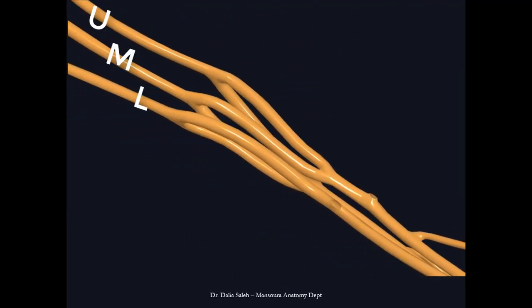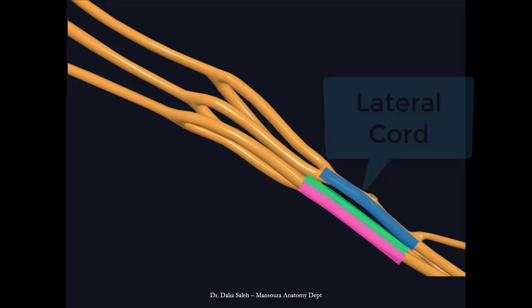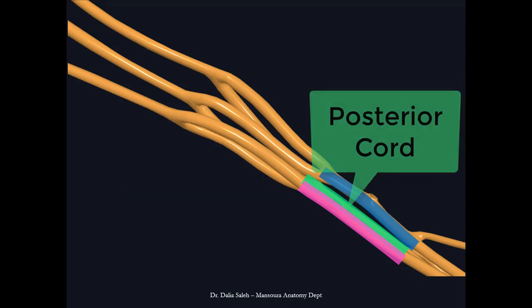The anterior division of the upper and middle trunks forms the lateral cord of the brachial plexus, while the anterior division of the lower trunk forms the medial cord. The posterior divisions of all three trunks unite to form the posterior cord of the brachial plexus. So we end up with three cords: the medial cord, the lateral cord, and the posterior cord.